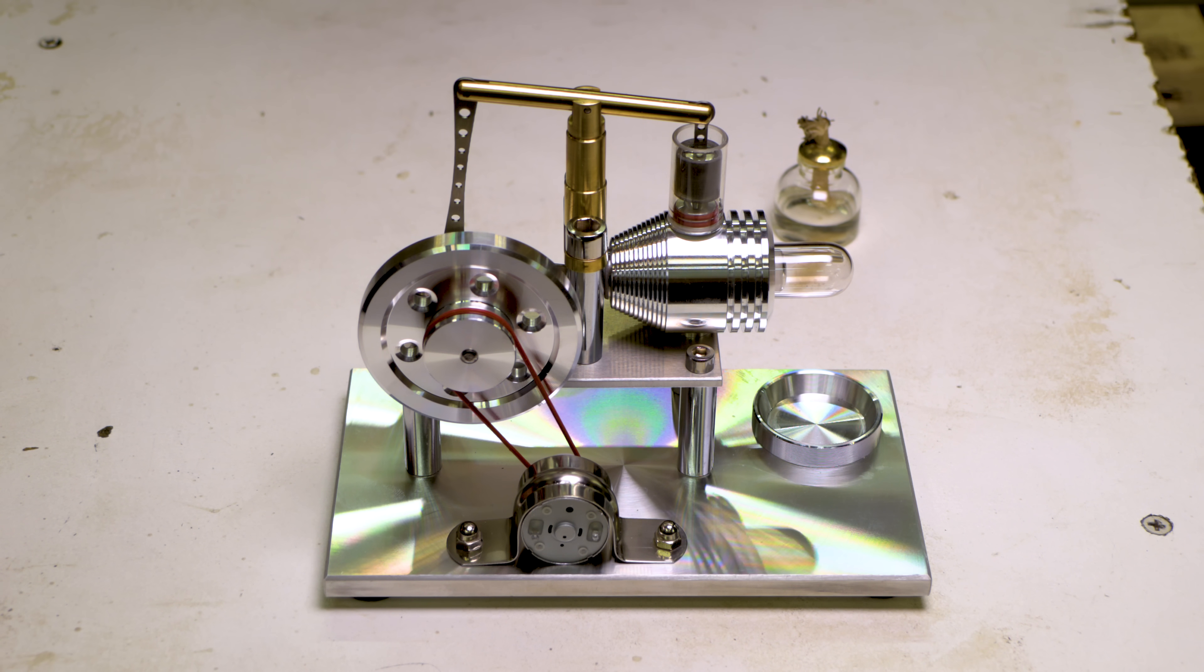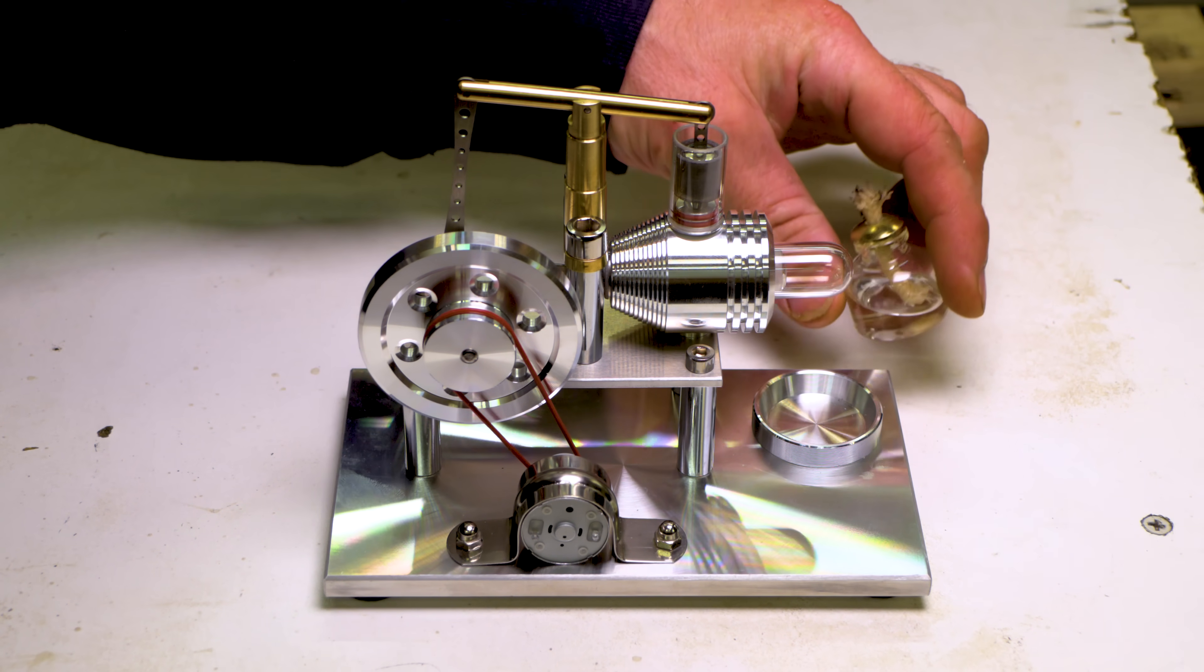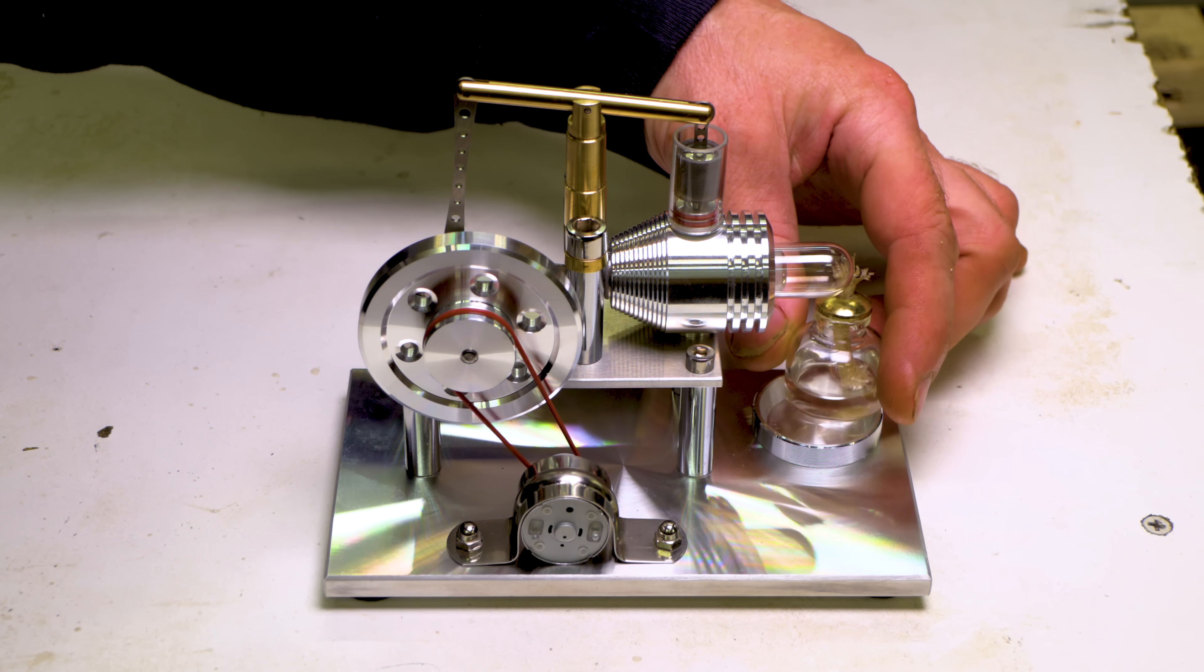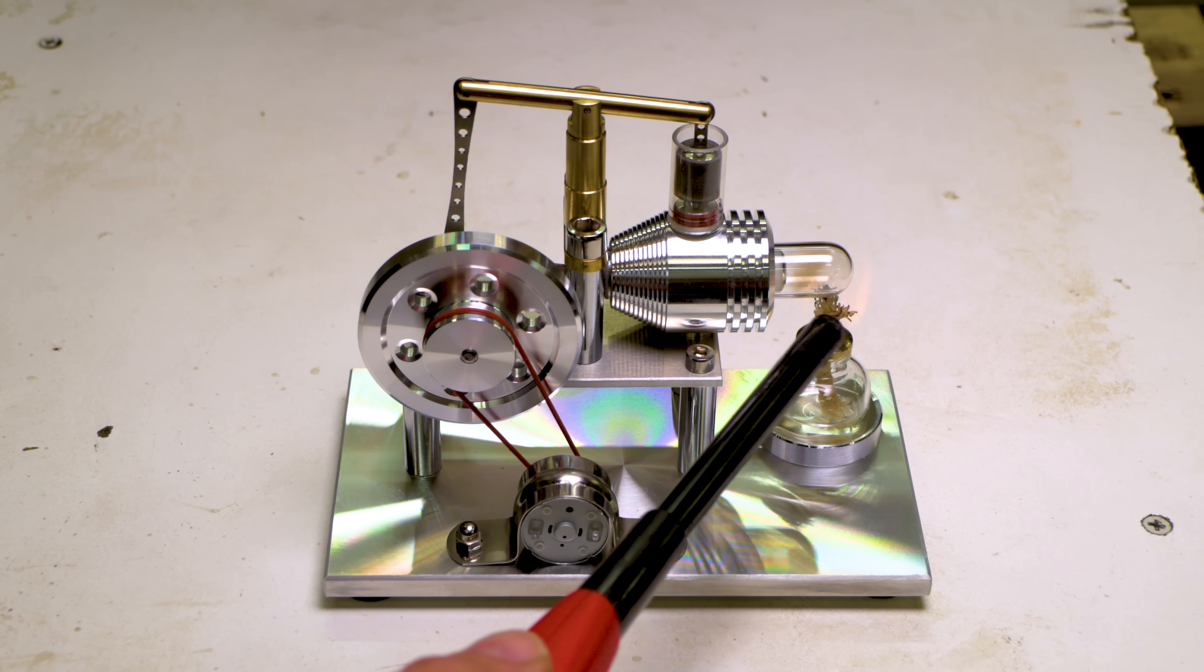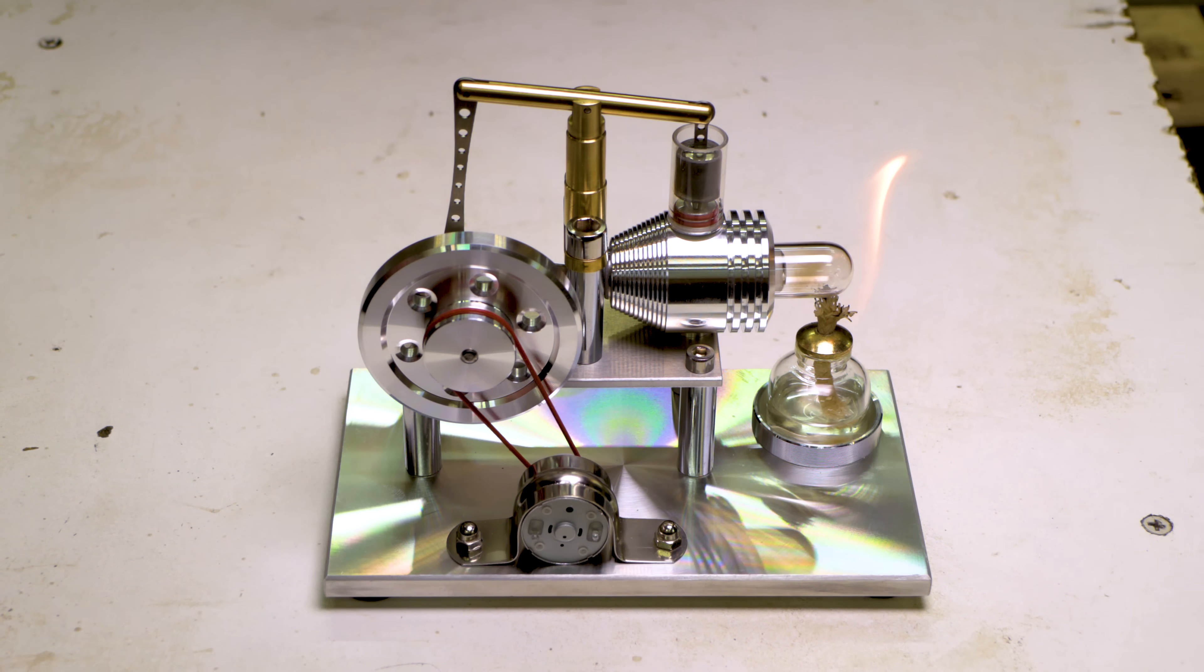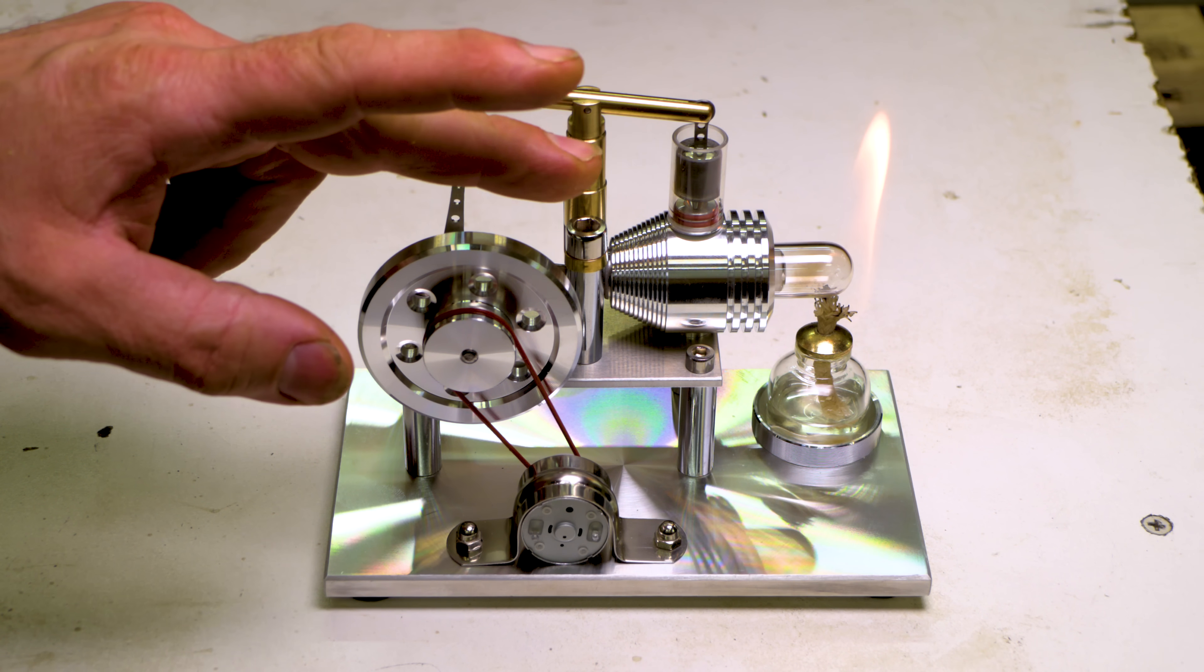Now before setting this engine up to run non-stop, I want to show you how the engine is normally used. You have this little fuel bottle right here that you fill with alcohol, you put it there, you light the wick, you let it heat up that back cylinder for a few seconds, and then you give the engine a little push to start it.